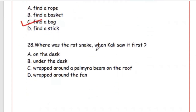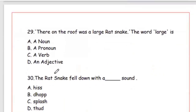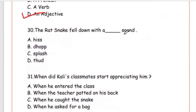Question 28: Where was the rat snake when Kali saw it first? Option C is the right answer — wrapped around a palmyra beam on the roof. Question 29: In 'There on the roof was a large rat snake,' what is the word 'large'? It is an adjective, Option D. Question 30: The rat snake fell down with what sound? Answer is Option B, thap.